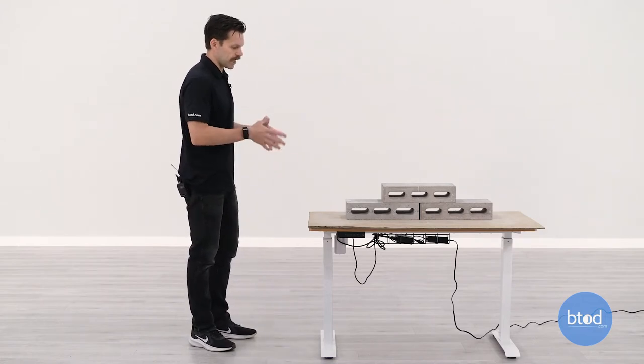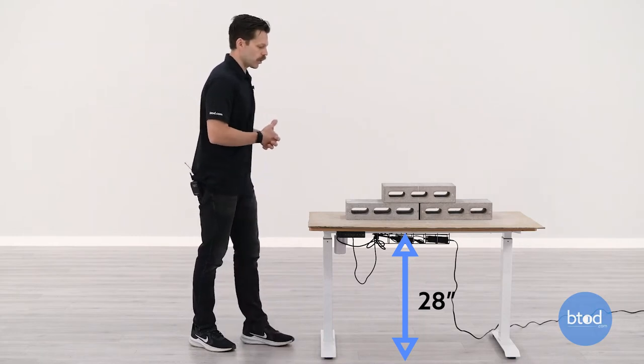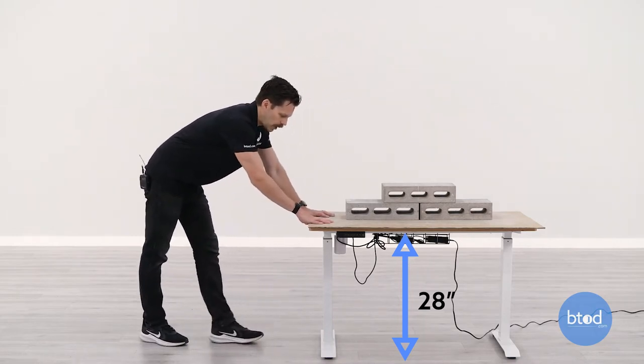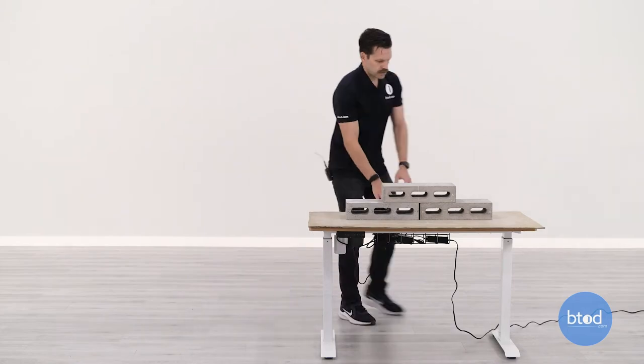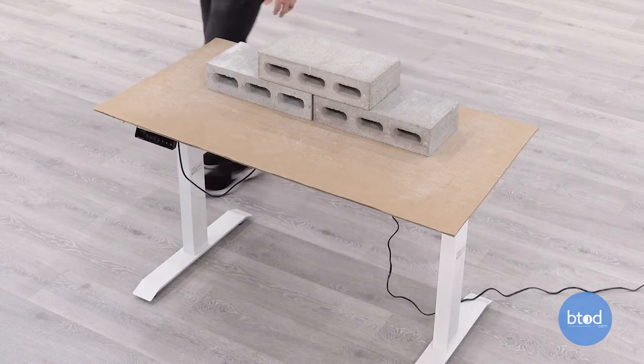As you can see, we've got it set at the bottom here, about 28 inches. This desk goes from 28 to 46. So we're going to check the bottom for wobble first. At the bottom, it's nice and solid. And rocking, same thing. Desk is nice and solid.